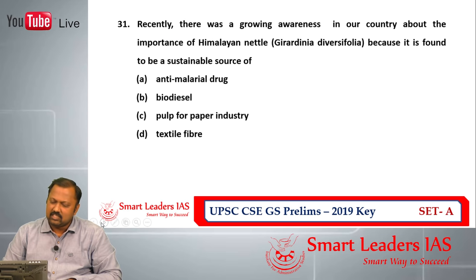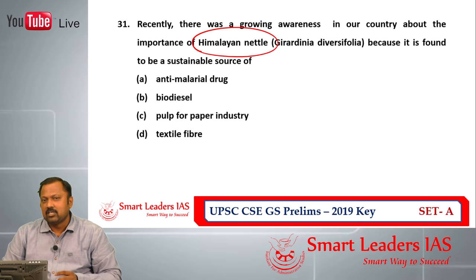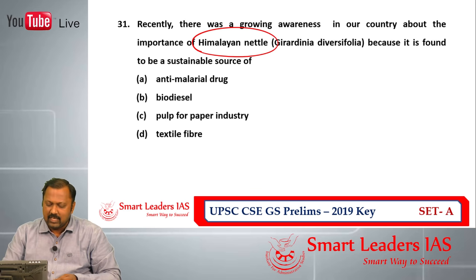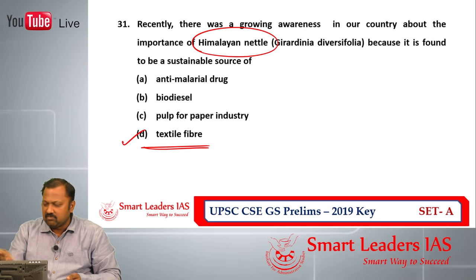Question number 31: recently there was growing awareness about the importance of Himalayan nettle — it is an important fiber plant. The reason it has been in recent news is that the community harvesting this plant produces a fiber from it, and based on that fiber they market cloth to the international market, making significant income. So question number 31, the most apt answer among the given choices is textile fiber. Answer is D.